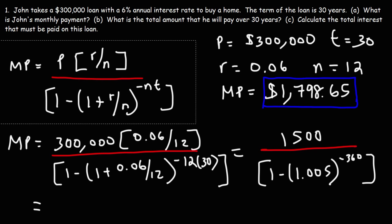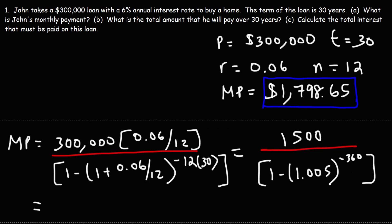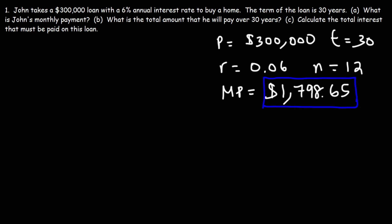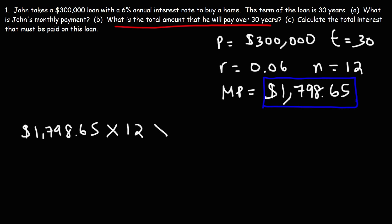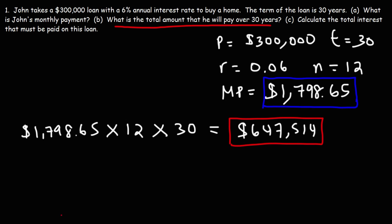Now let's move on to Part B. What is the total amount that John will pay over 30 years? We know the amount he's going to pay every month, and there are 12 months in a year, so that gives his annual payment. Then we multiply by 30 years for the entire loan. So all we have to do is multiply the monthly mortgage payment by 12 and by 30. He's going to pay $647,514 over the life of the loan.